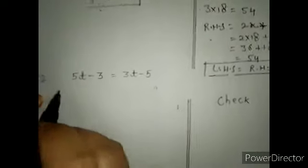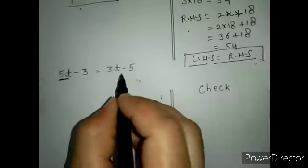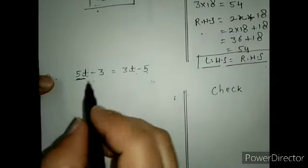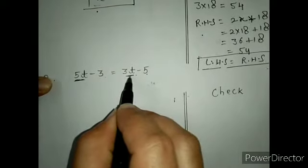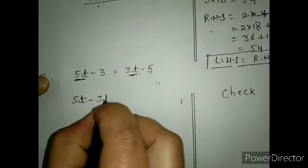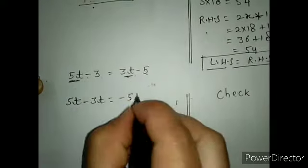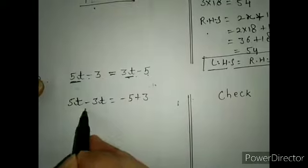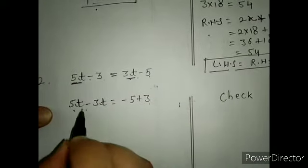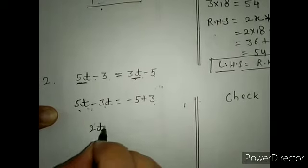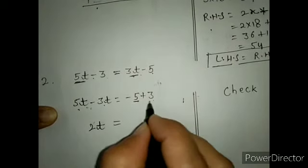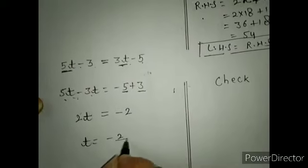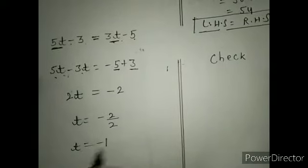Now come to question number 2. Given: 5t minus 3 equals 3t minus 5. Same method we follow. 5t and 3t are like terms. 3t comes to the left side and becomes negative. 2t minus 5 plus 3 equals minus 2. So 2t equals minus 2, and the value of t is minus 2 by 2, which gives t equals minus 1.